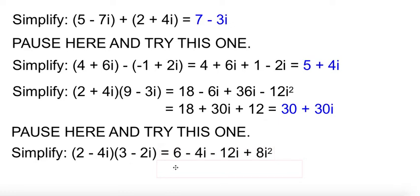Distributing things out, 8 times i squared is negative 8. So the time we collect everything up, we get negative 2 minus 16i.